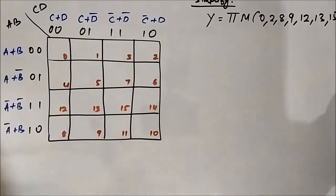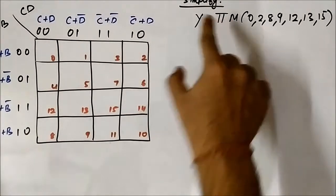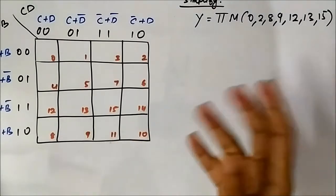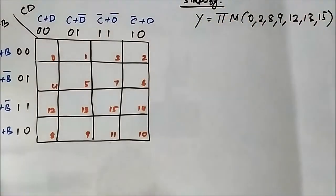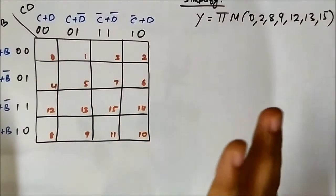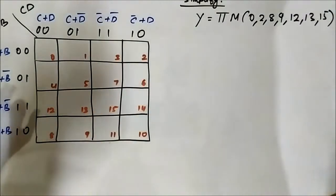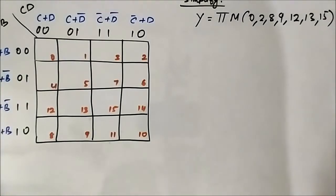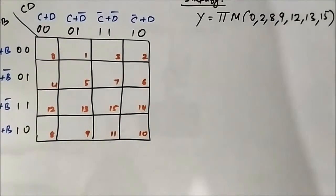Here we have a question on simplification and we have a POS expression given in terms of max terms. The max terms are 0, 2, 8, 9, 12, 13, and 15. I have already discussed min terms, max terms, SOP, POS, and canonical forms — it is all in the digital electronics playlist, so please go through the relevant videos.